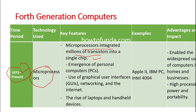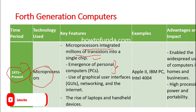From 1971 onwards we started seeing personal computers — earlier there were huge computers, big in size, but from 1971 onwards personal computers appeared. Fourth generation computers make use of very good user interfaces and have capabilities for networking, internet, and the rise of laptops and handheld devices.